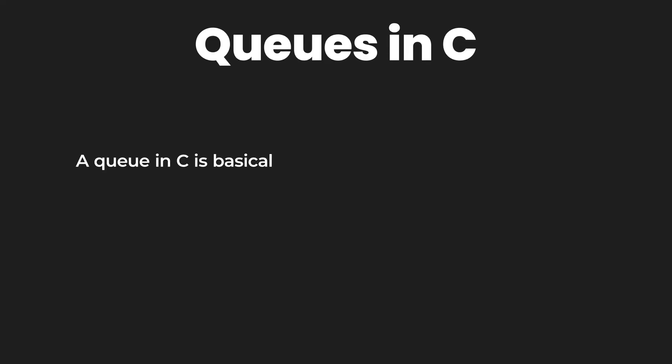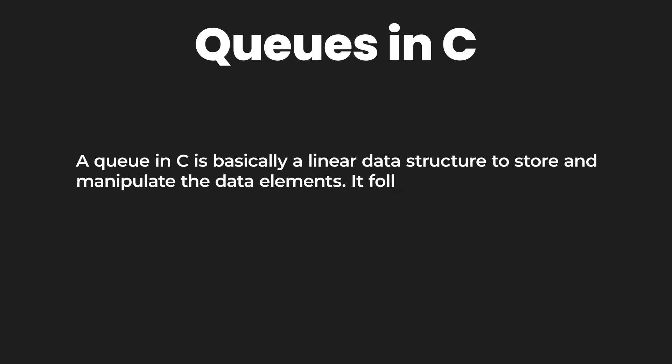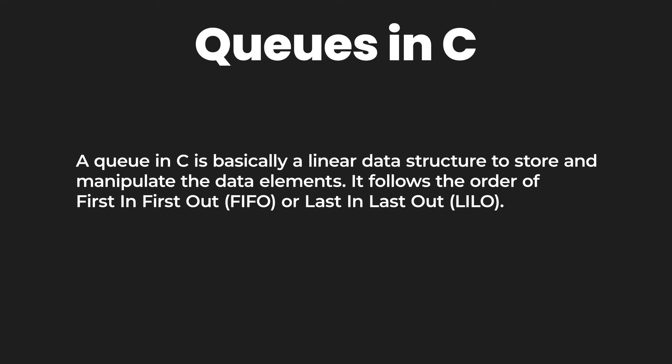So what is a queue? A queue is a linear data structure used to store and manipulate data elements. It follows the order of first in, first out — or we can say last in, last out.